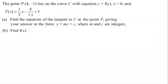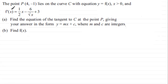Hi, this is a good example of a question where you're given the first differential f'(x) of a function — or f prime x as some people call it — and you're asked to find the equation of a tangent and also find what f(x) was. We've got point P with coordinates (4, -1) lying on curve C with equation y = f(x), where x > 0, and f'(x) equals (½x - 6) all divided by the square root of x, plus 3.